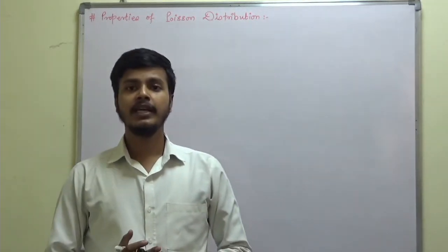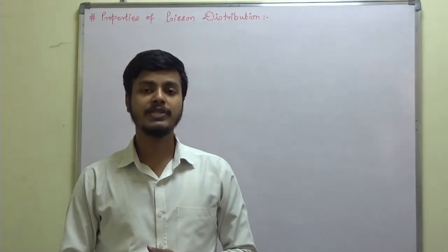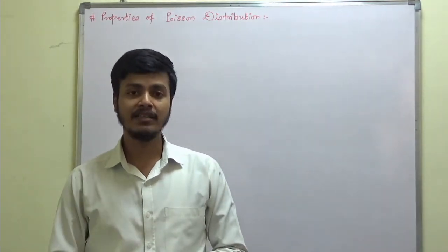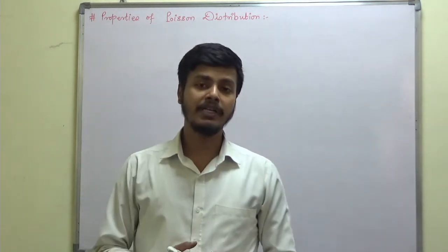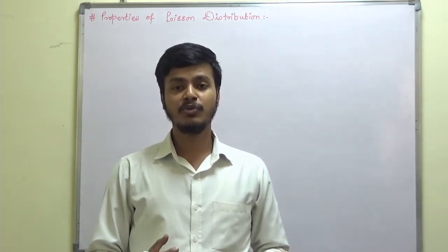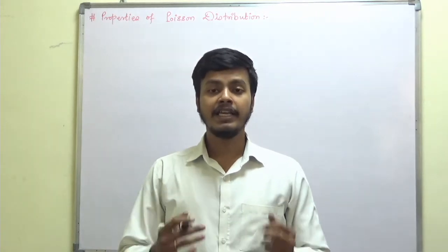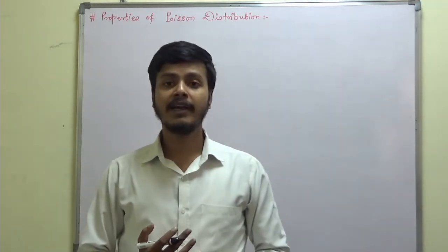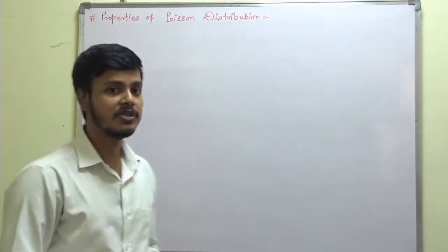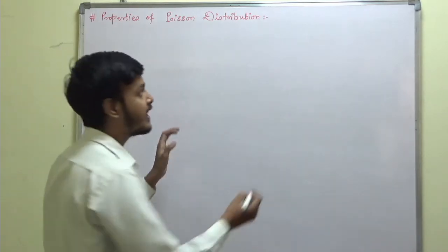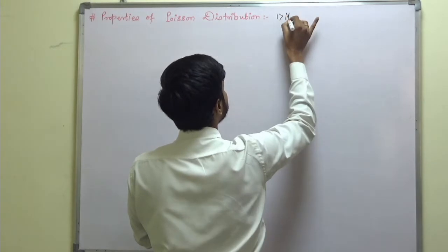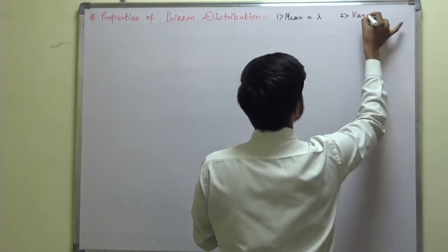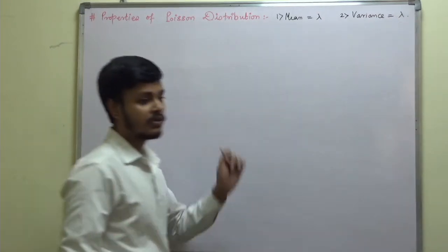Hello and welcome to this learning video. In the last learning video we have seen a few properties of Poisson distribution, namely mean, variance, and standard deviation. We also saw a result showing that in the Poisson distribution mean is the same as variance. The first property proved is mean equals lambda, and the second is variance also equals lambda.